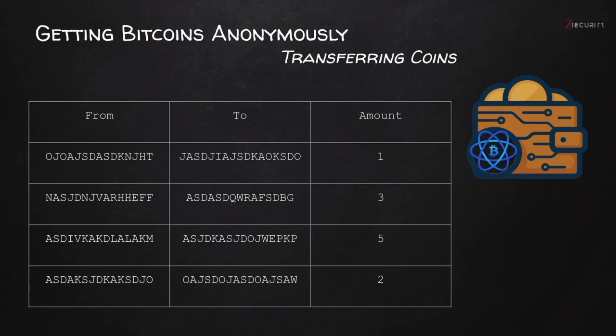The Bitcoin ledger, or blockchain, is completely public and anybody can read and analyze it. In each blockchain entry there isn't a lot of information about the people transferring money, but you'll see the addresses of the senders and receivers. This is fine as long as these addresses are not linked to identities.